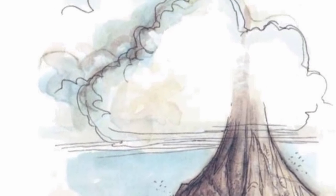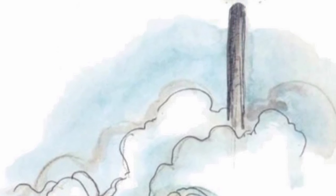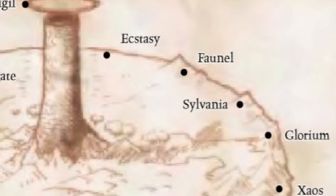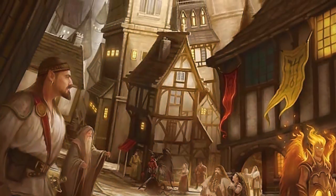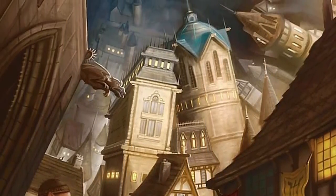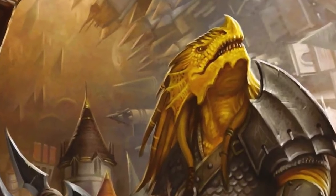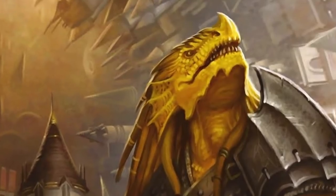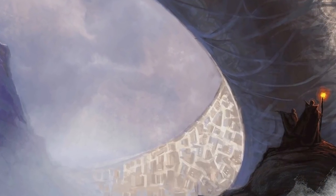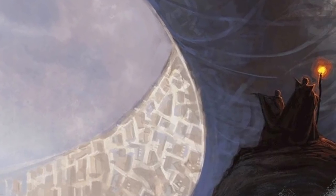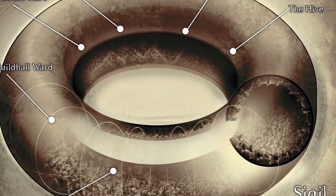The Outlands is the plane between the outer planes — a plane of neutrality keeping all aspects in paradoxical balance. It's a circular plane like a great disc, and inspired the Great Wheel model. Along the outside edge are 16 gate towns, each built around a portal leading to one of the outer planes — it isn't unusual to see a celestial and a fiend arguing while sharing a bottle of wine. You can actually ride a horse in the Outlands from a heaven to a hell. At the center of the Outlands is the ring-shaped city of Sigil — the City of Doors — a bustling planar metropolis holding countless portals to other planes and worlds.